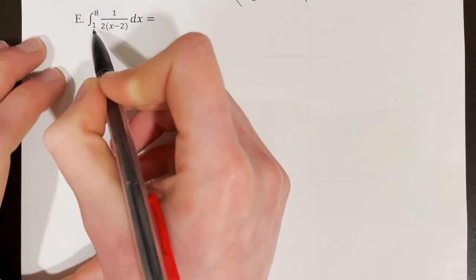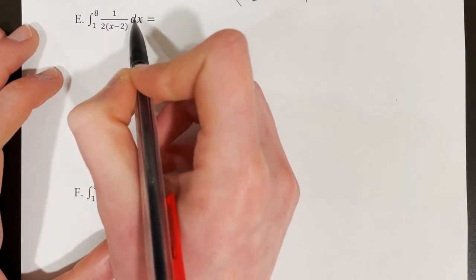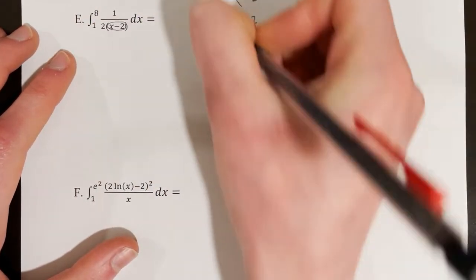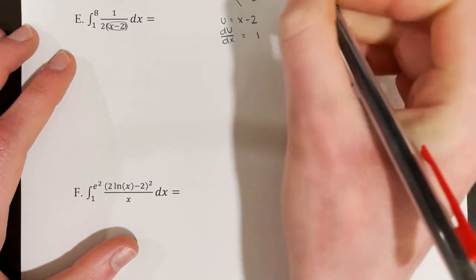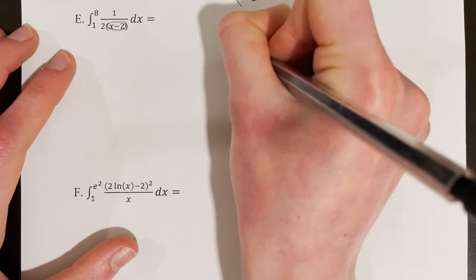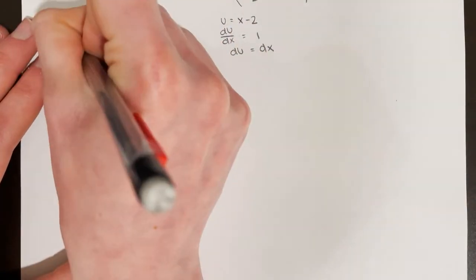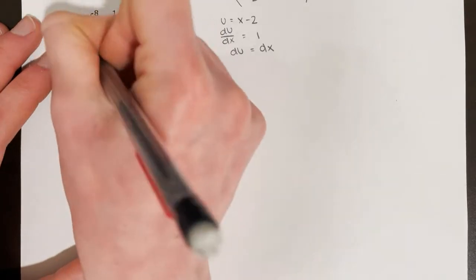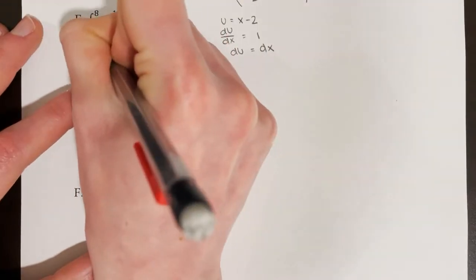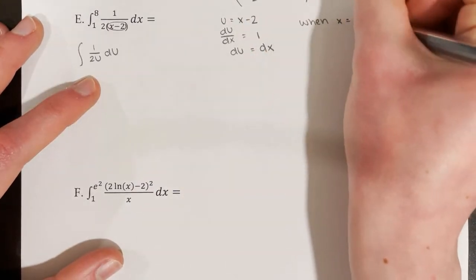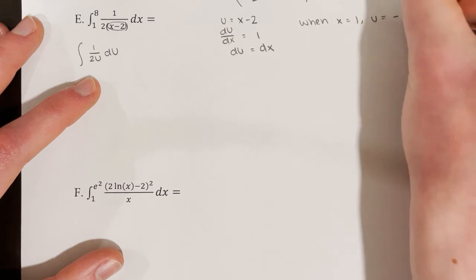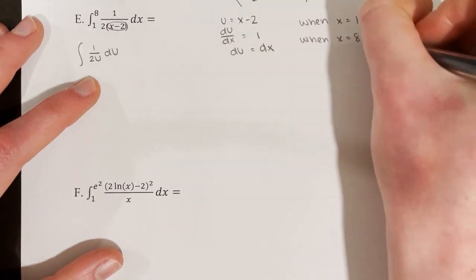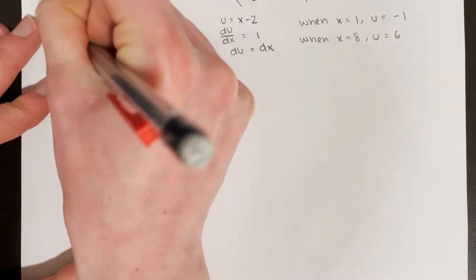Part E: find the integral from 1 to 8 of 1 over 2(x minus 2) dx. We need to identify u — in this case u equals x minus 2. Taking the derivative: du/dx equals 1 because the derivative of x minus 2 is 1, so du equals dx. That is a nice simple swap. We go straight to plugging in u, which means we're no longer dealing with x bounds. We have 1 over 2u du, and the integral runs from negative 1 to 6 since x goes from 1 to 8.